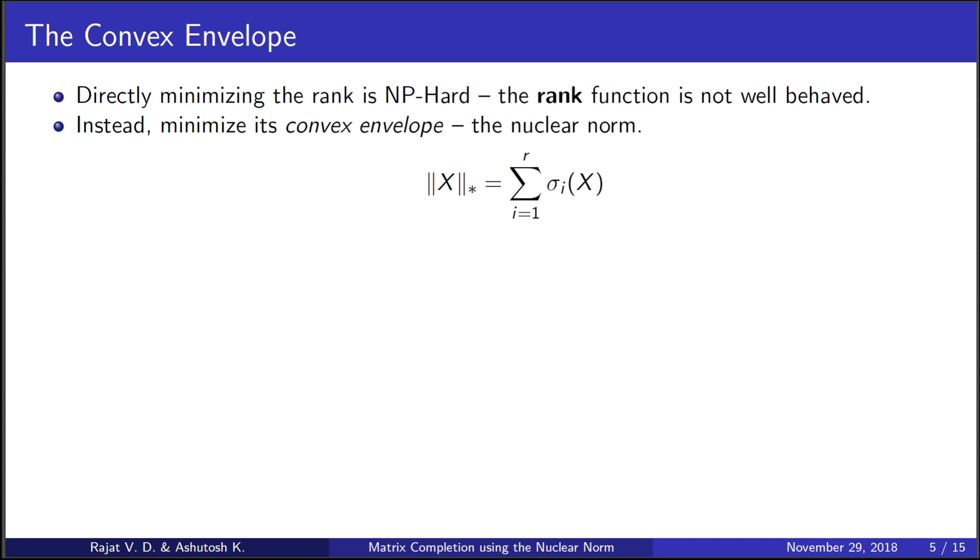Now, what is a convex envelope? If f(X) is an objective function that we want to optimize, then g(X) can be seen as the largest convex function less than f(X). Since g(X) is convex, it offers a global minima, and we can now say that minimizing g(X) approximately minimizes f(X).